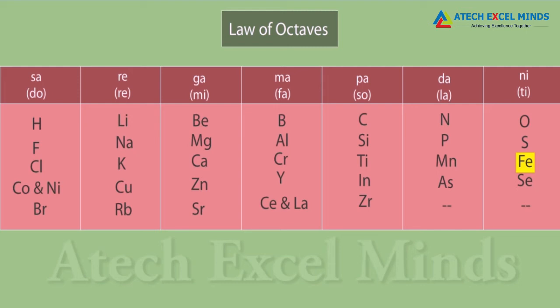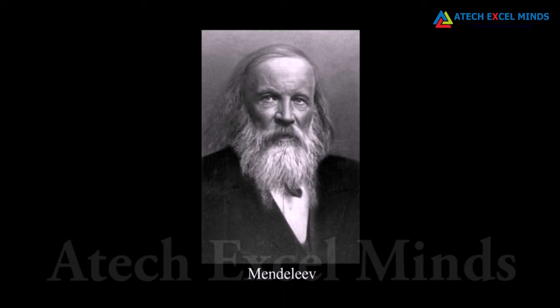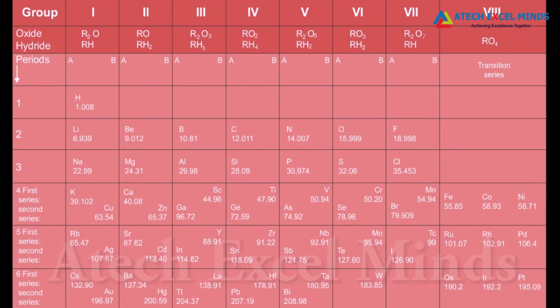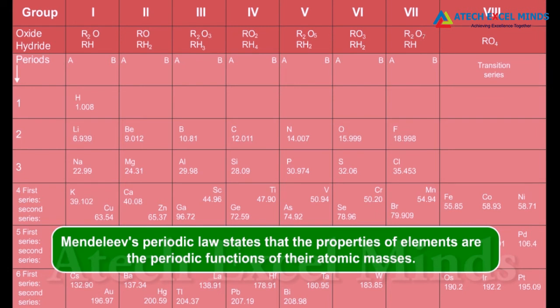Mendeleev was the main contributor to the early development of the periodic table, in which elements were arranged on the basis of their fundamental property — atomic mass — and similarity of chemical properties. Mendeleev worked on 63 elements and studied the compounds they formed upon reaction with hydrogen and oxygen. He grouped those with similar properties in order of increasing atomic masses, and observed a periodic recurrence of elements with similar physical and chemical properties. Mendeleev's periodic law states that the properties of elements are periodic functions of their atomic masses.